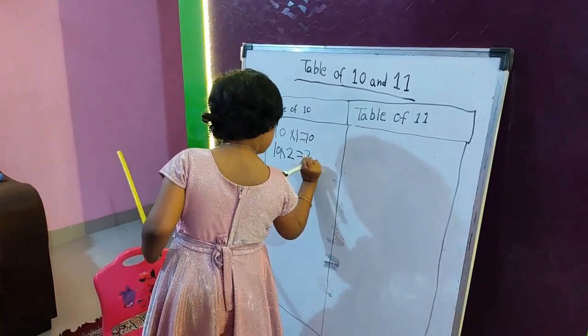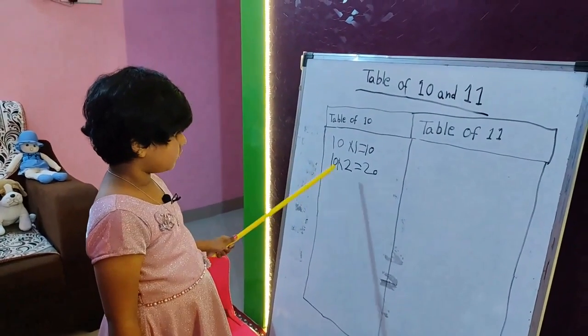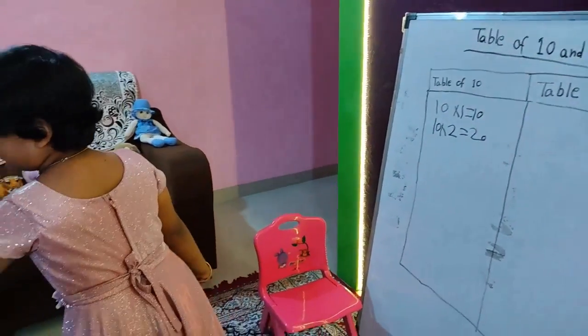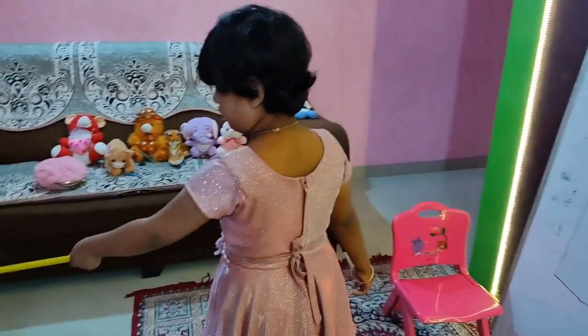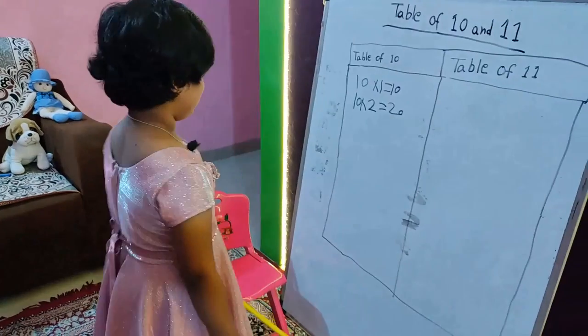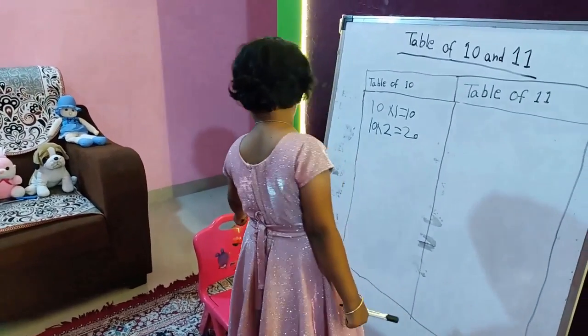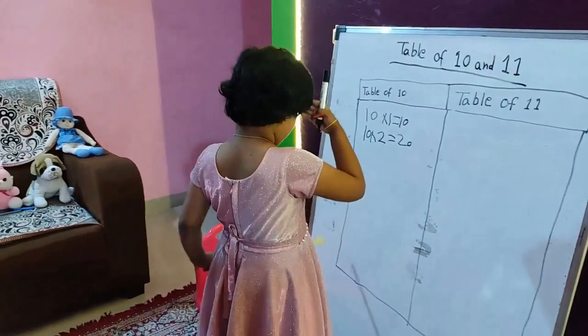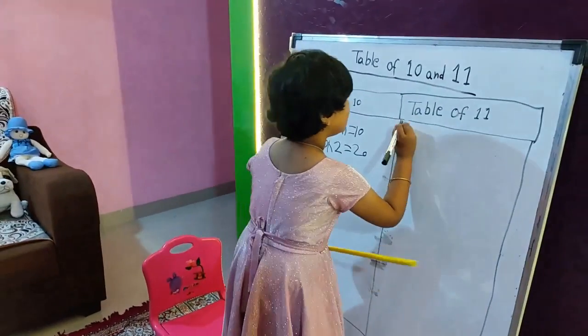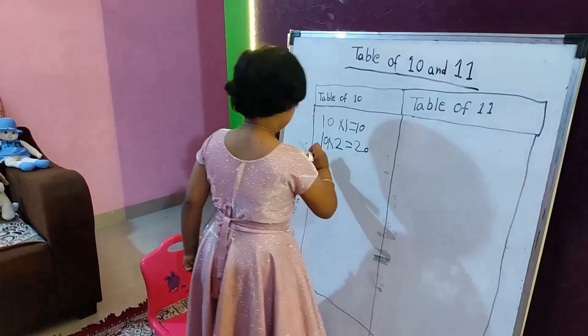Ten times two equals twenty. Do you see this is ten and multiply one equals ten, ten times two equals twenty. You know what it is? I write ten multiply two equals twenty. Okay teacher, I said you know it.